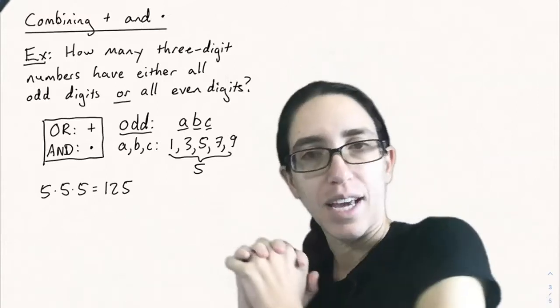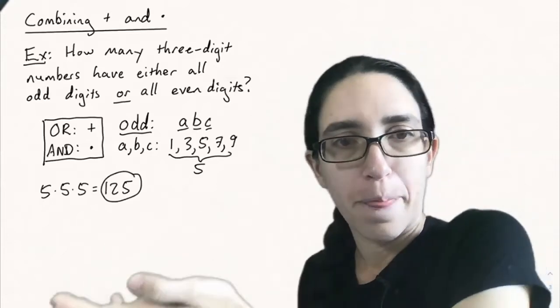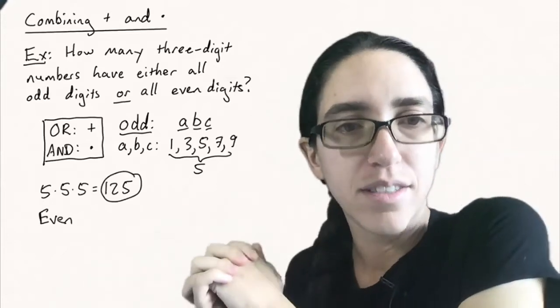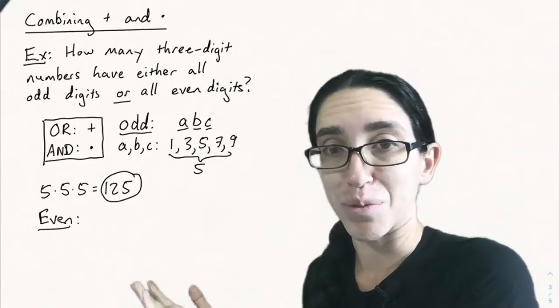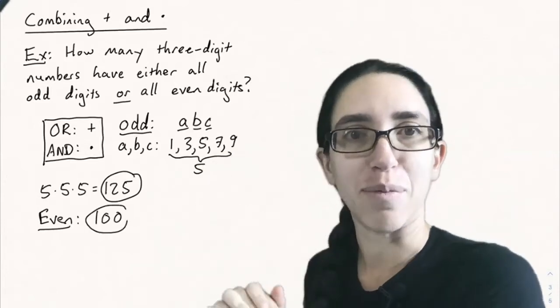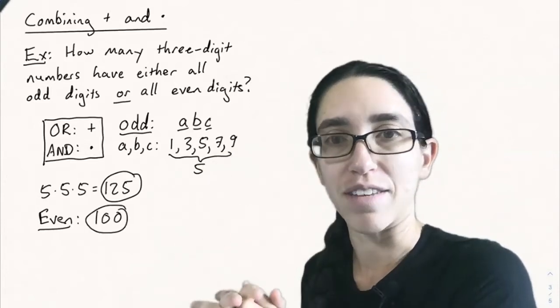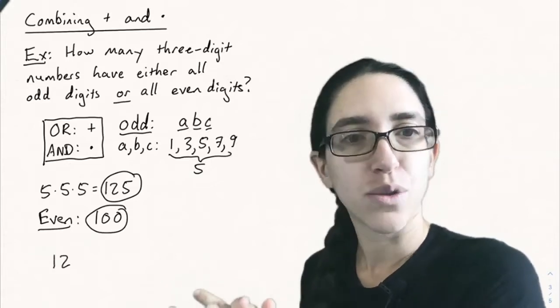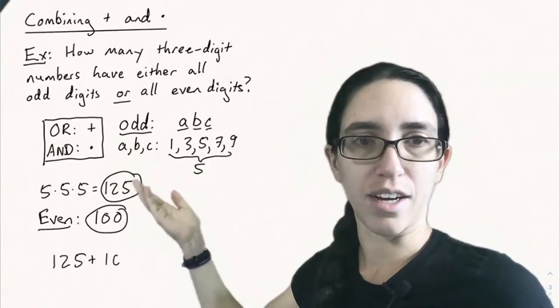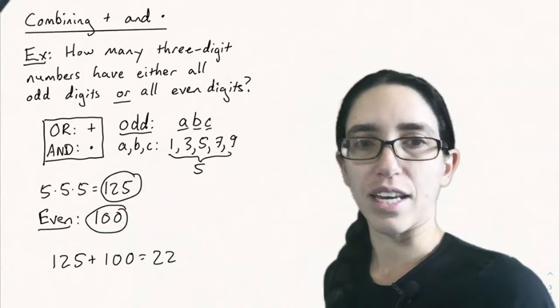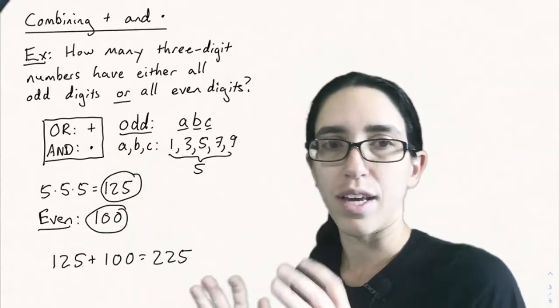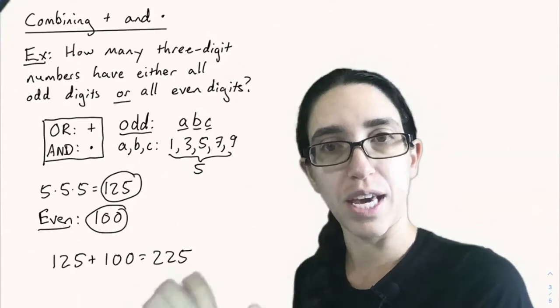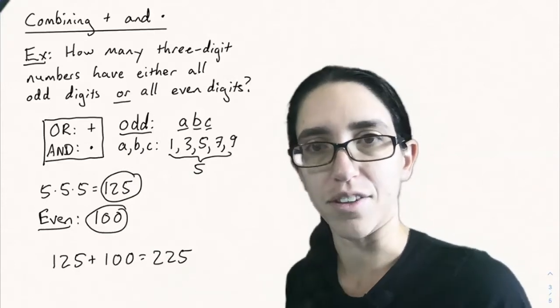Now let's do the even case. For the even case, we already did it in the previous problem. If you remember, we counted how many three-digit numbers have all even digits. It was a hundred. So now by the addition principle, we can add 125 to 100 and get 225. So we split this problem into two separate multiplication problems and then add them together at the end.